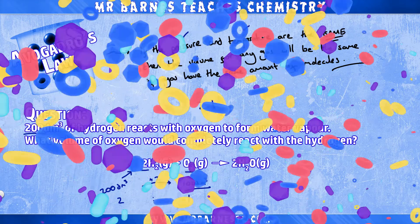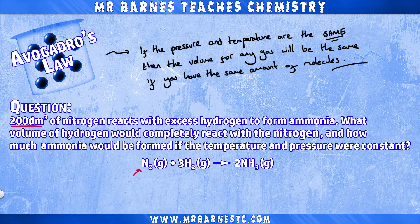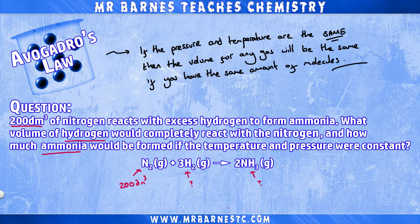Let's look at one more question before I let you guys have a go, which says 200cm³ of nitrogen reacts with excess hydrogen to form ammonia. What volume of hydrogen would completely react with the nitrogen, and how much ammonia would be formed if the temperature and pressure were constant? I want to look at my ratio between nitrogen and hydrogen, which is 1 to 3, and then 1 to 2 for ammonia.